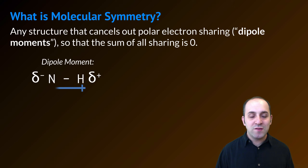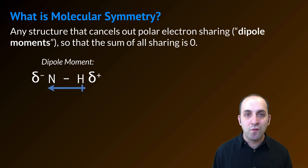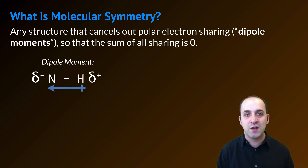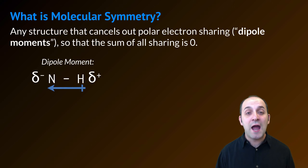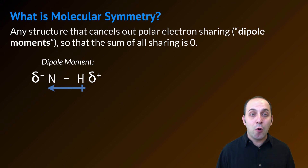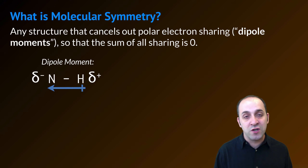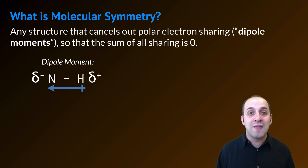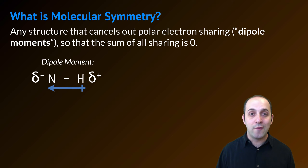A dipole moment is just the result of a polar covalent bond. You can see it here in this bond between nitrogen and hydrogen. Nitrogen is partially negative and hydrogen is partially positive due to the electronegativity difference. The dipole moment is this arrow which points towards nitrogen, showing that the electrons are going to be shared unequally and spend more of their time around nitrogen than they are around hydrogen.